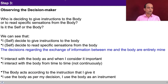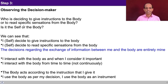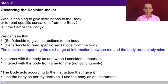In step 3, you observe the decision maker — who is deciding to give instruction to the body or to read specific sensations from the body. Is it the self or the body? Many times you can assume that it is something happening by itself, spontaneously, automatically, by default. But you miss the point that you are making a decision there. Maybe when I am delivering this lecture, there might be some sensation coming from the leg, but I might be ignoring it because conveying something to you carries importance for me. That sensation from the throbbing of the leg does not carry that much importance, so I ignore it — our decision making is involved.